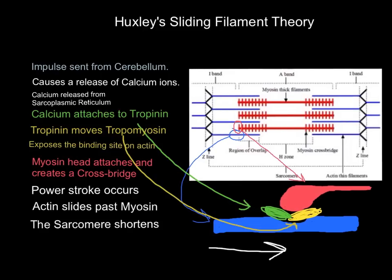As a result of the power stroke, the actin slides past the myosin and the entire sarcomere shortens. Along the length of a muscle like your bicep, you have thousands — possibly millions — of sarcomeres arranged end to end. Each one shortens by a tiny amount, but add them all together and the muscle shortens by a large amount, producing a contraction.